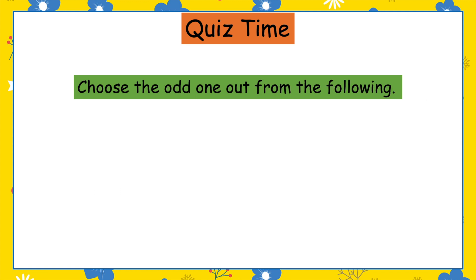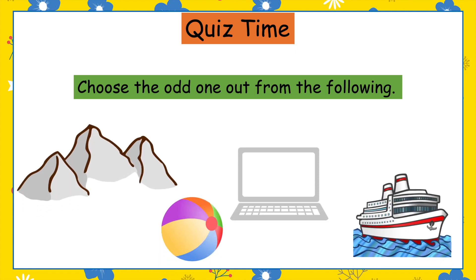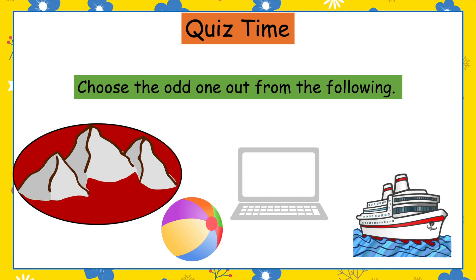Choose the odd one out from the following: mountain, ball, laptop, ship. It's mountain, because the rest are man-made non-living things.